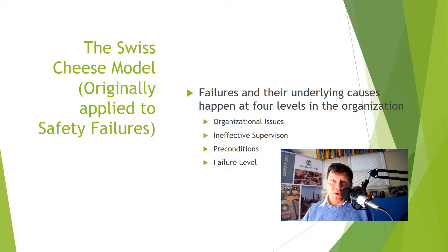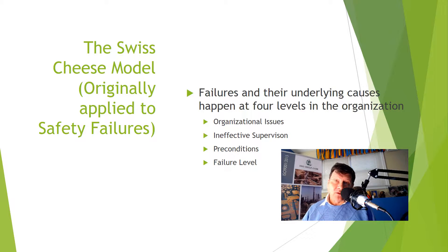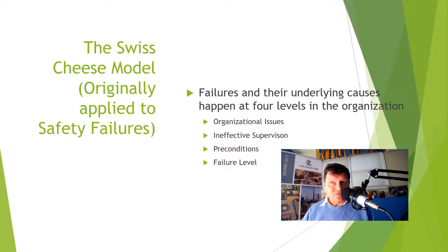As we pointed out, the Swiss cheese model holds that failures and their underlying causes happen at four levels in the organization: organizational issues, supervisory issues, preconditions for failure, and at the lowest level, the failure level. At each of these levels, there are holes in the defense that lead to the adverse event.